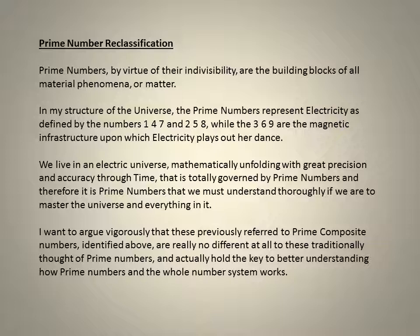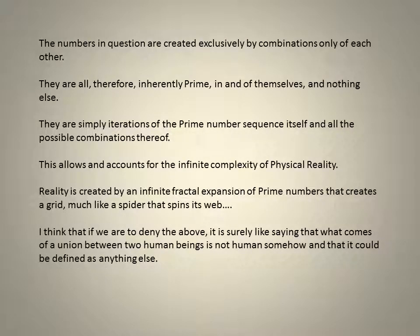I want to argue vigorously that these previously referred to prime composite numbers identified above are really no different at all to these traditionally thought of prime numbers, and actually hold the key to better understanding how prime numbers and the whole number system works. The numbers in question are created exclusively by combinations only of each other. They are all, therefore, inherently prime in and of themselves and nothing else. They are simply iterations of the prime number sequence itself and all the possible combinations thereof. This allows and accounts for the infinite complexity of physical reality.